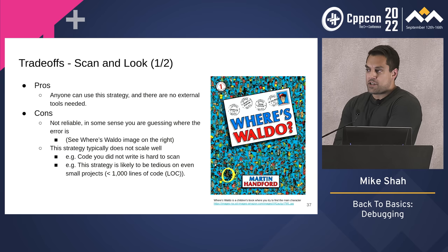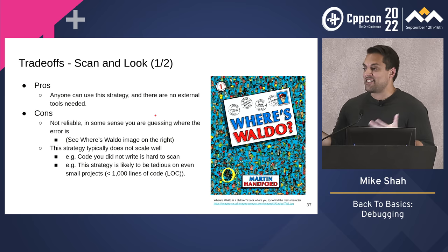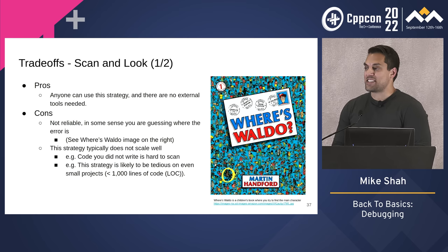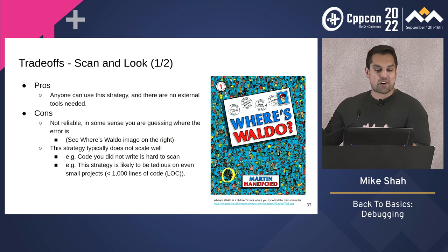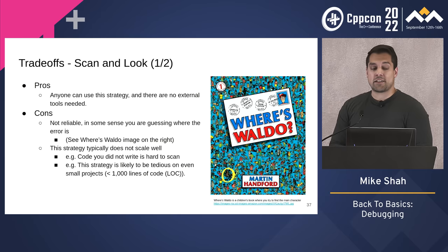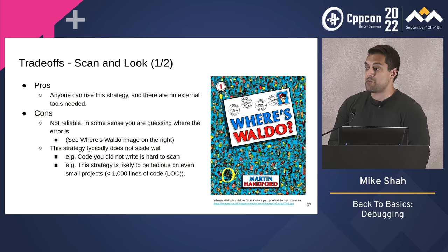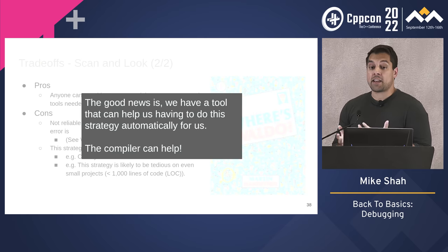Even if the code compiles, that doesn't imply correctness. The scan and look strategy works, but we need to improve on it. Anyone can use it — you write some code, look at it, and try to see if it's correct — but it's not necessarily reliable; you're making a guess about what's going to happen. And this strategy doesn't really scale. Once you get to a thousand lines of code it starts to break down, let alone hundreds or millions of lines.